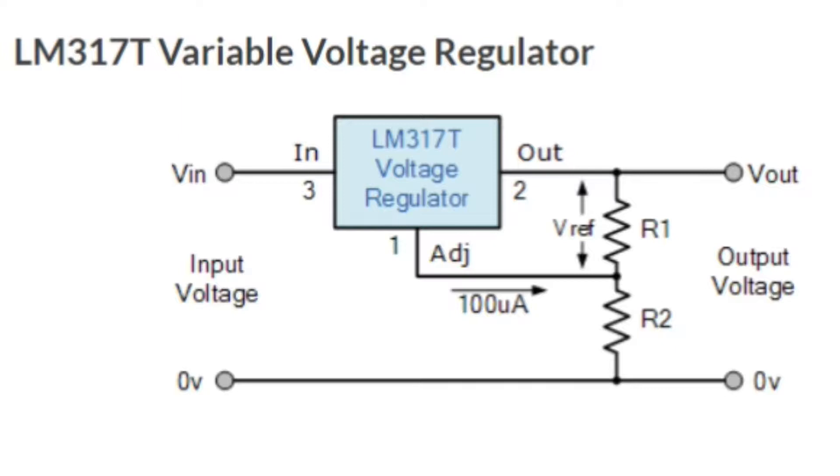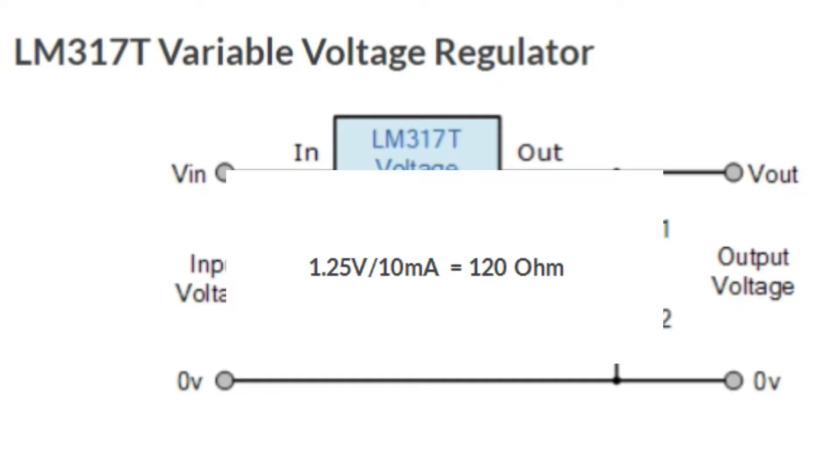The LM317 has very good load regulation, providing that the minimum load current is greater than 10 milliamps. So to maintain a constant reference voltage of 1.25 volts, the minimum value of feedback resistor R1 needs to be 1.25 volt divided by 10 milliamps, which is equal to 120 ohms.